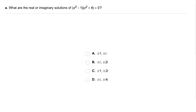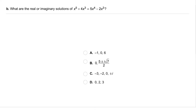Your turn. Part A: what are the real or imaginary solutions of x squared minus 1 times x squared plus 4 equals zero? Part B: what are the real or imaginary solutions of x to the fifth plus 4x cubed equals 5x to the fourth minus 2x cubed?